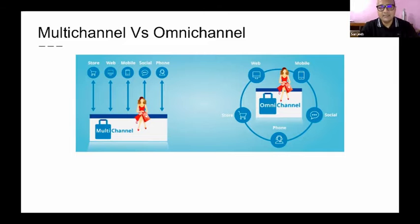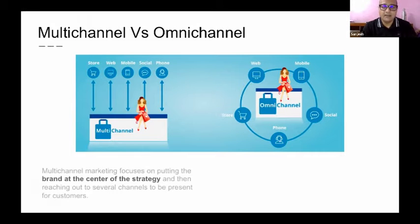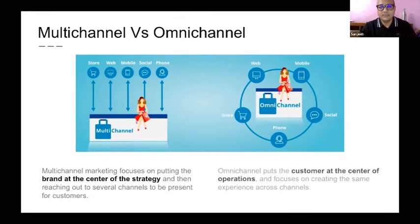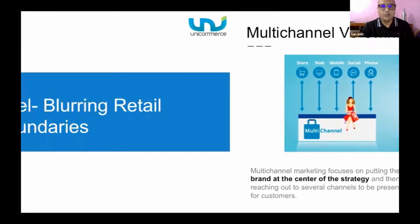Multichannel basically revolves around a brand — a company where the brand is trying to sell on a store, a web, a mobile, or maybe social media or phone, as you can see on my slide. Whereas in Omnichannel, the customer sits at the center and every channel revolves around the customer, trying to give the same experience across all channels. That's the core difference between a multichannel and an Omnichannel solution.